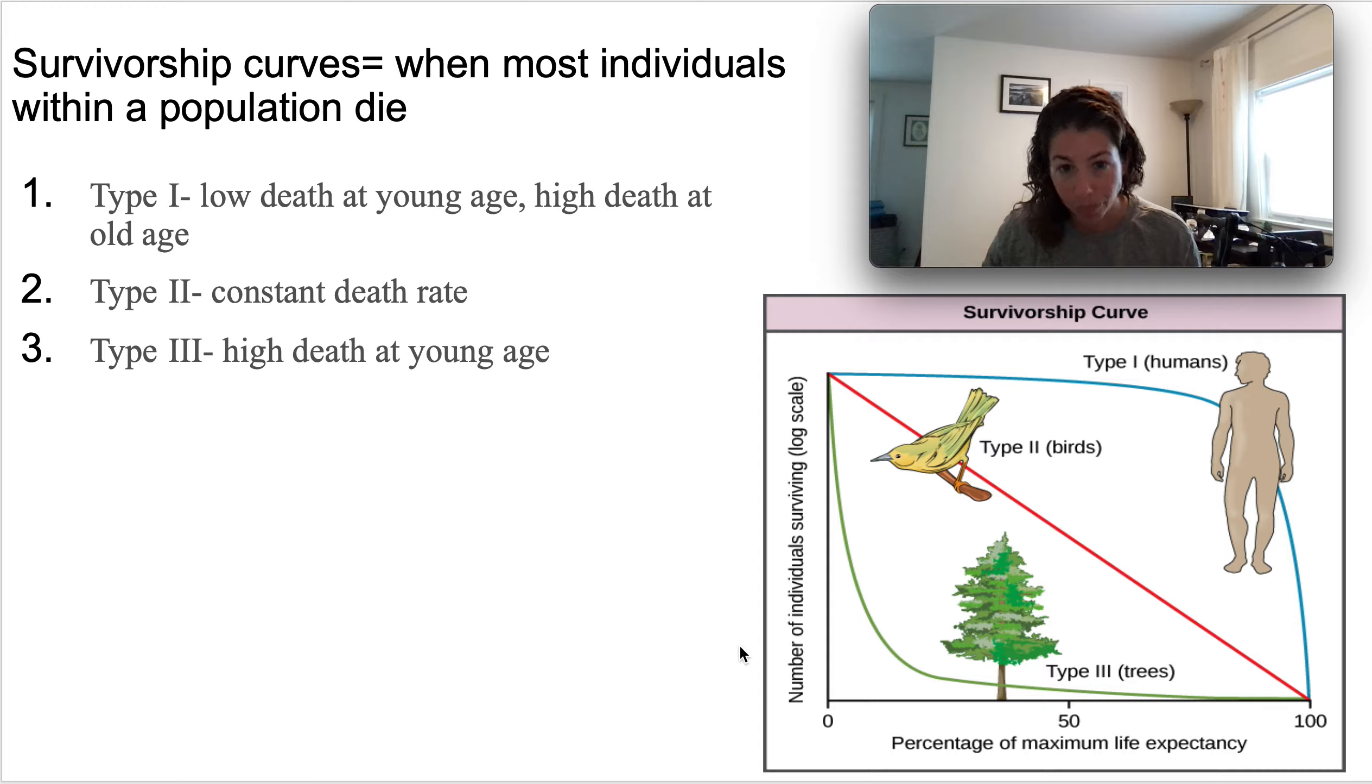And then Type III is there's a high death at young age, and then if you survive young age, most likely you are going to survive all the way to your maximum 100% life expectancy, but the majority of organisms don't. One of our students looked up and said that fruit flies are Type III. There's a high death at young age. A lot of trees and plants are like this. They produce so many seeds, but not many of those seeds are actually able to germinate, reproduce, and then grow into a seedling, which then can grow into a tree.